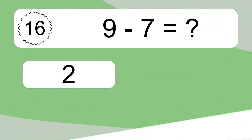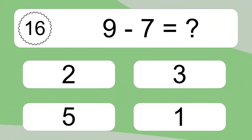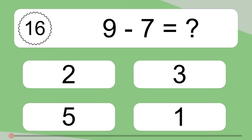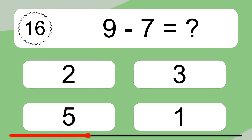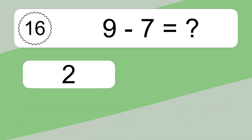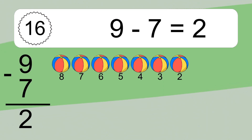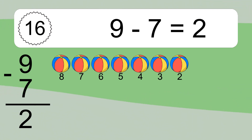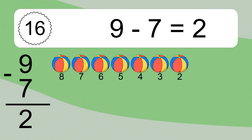9 minus 7 equals what? 9 minus 7 equals 2. Let's count it: 8, 7, 6, 5, 4, 3, 2.